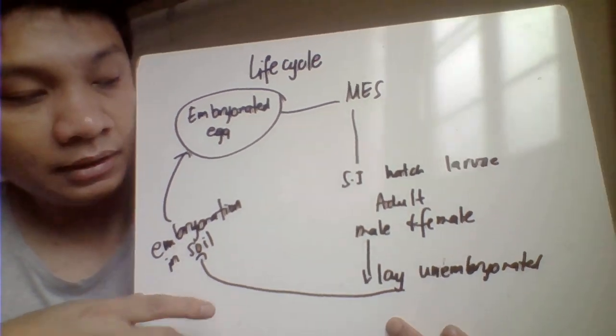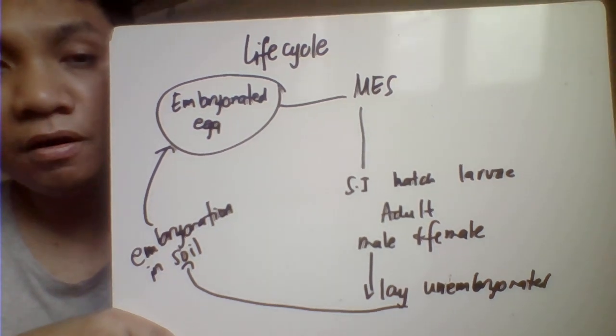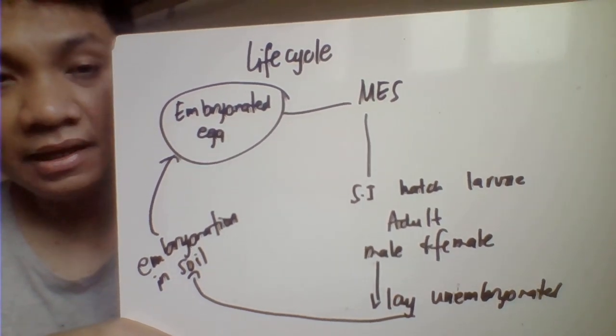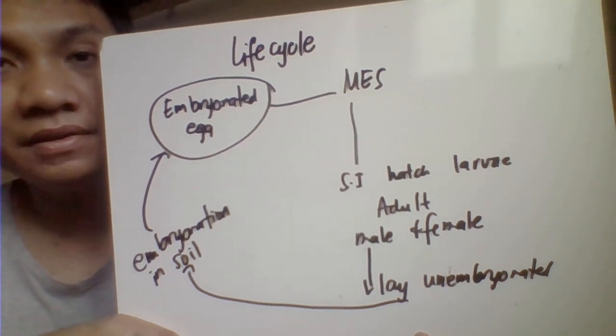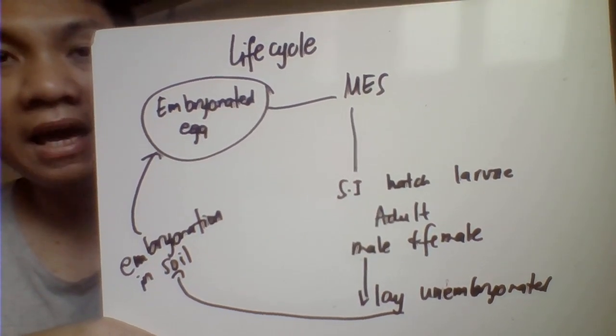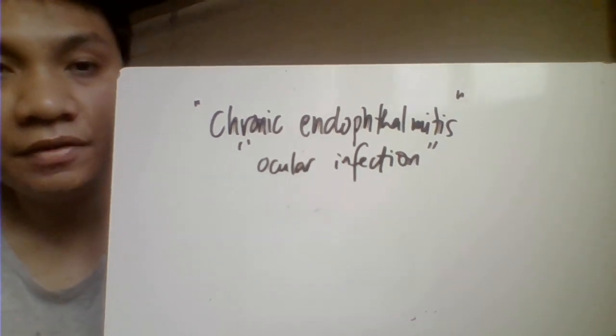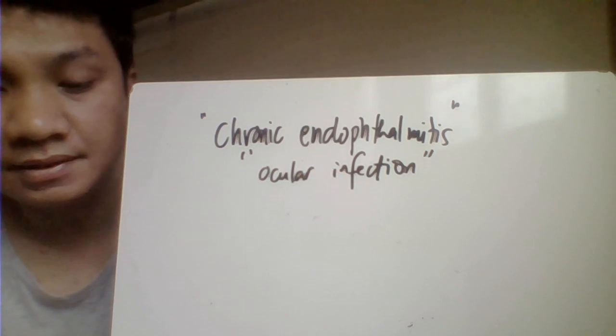The larva is also capable of extraintestinal infection — it can migrate to the lungs, brain, heart, or eyes, causing chronic ocular manifestation called chronic endophthalmitis. This condition is characterized by eosinophilia with marked hepatomegaly and hyperglobulinemia. Preventive measures include staying away from dogs and cats or having your pets dewormed.